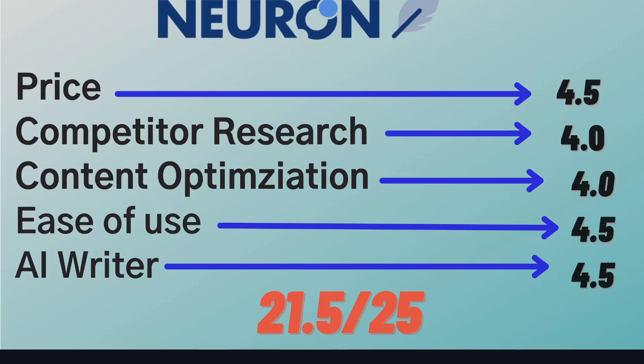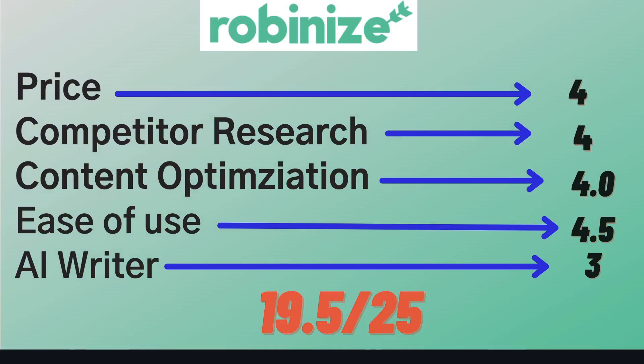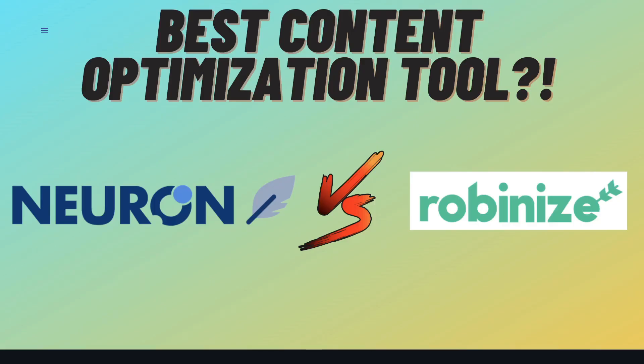For those reasons, I'd give Neuron Writer an overall score of 21.5 out of 25. They have really great pricing, really good competitor research tools, and their content optimization tool is also really good. But what I really like is their built-in AI copywriter that allows you to generate copy while optimizing at the same time — for a lifetime deal price, you get a lot of value and access to some really powerful tools. For RobinEyes, I'd give them a score of 19.5 out of 25. They're still a fairly new tool, so they'll likely get better. They can improve on competitor research and content research tools. Their content optimization tool is pretty good and very intuitive to use — but unlike Neuron Writer, they don't have a built-in AI copywriter. So if I had to choose, I would go with Neuron Writer over RobinEyes.